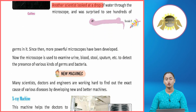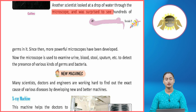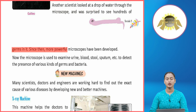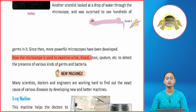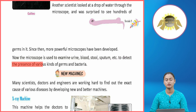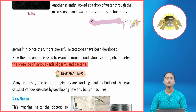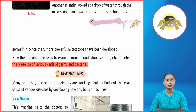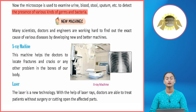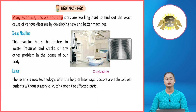Another scientist looked at a drop of water through the microscope and was surprised to see hundreds of germs in it. Since then, more powerful microscopes have been developed. Now the microscope is used to examine urine, blood, stool, sputum, etc., to detect the presence of various kinds of germs and bacteria. Today's microscopes are used to detect germs in urine, blood, stool, and similar materials.